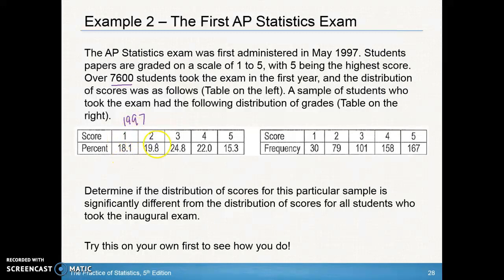So 18.1% got a one, 19.8% got a two, 24.8% got a three. A sample of students who took the exam had the following distribution of grades. So this right here is a group of students that took it later on.